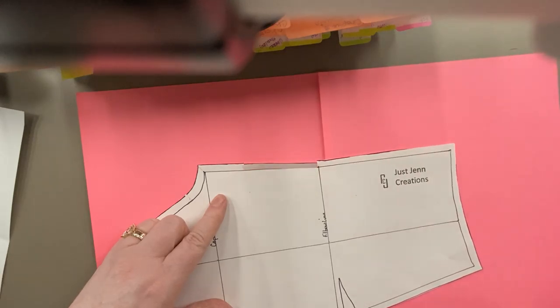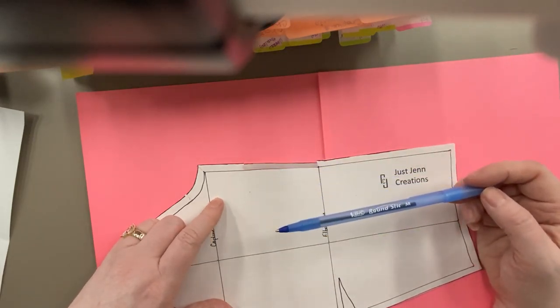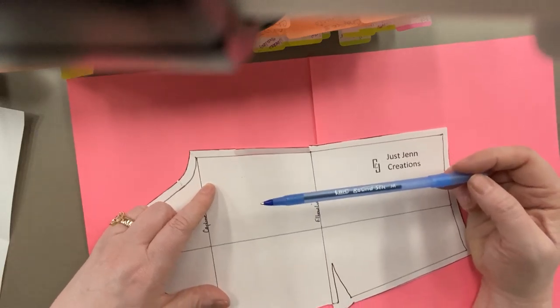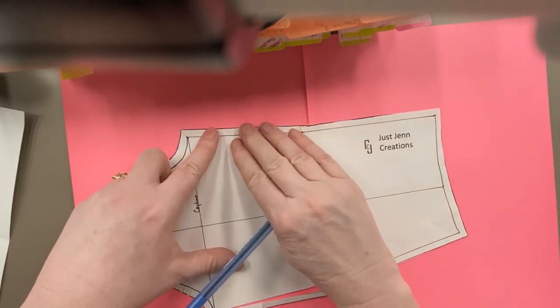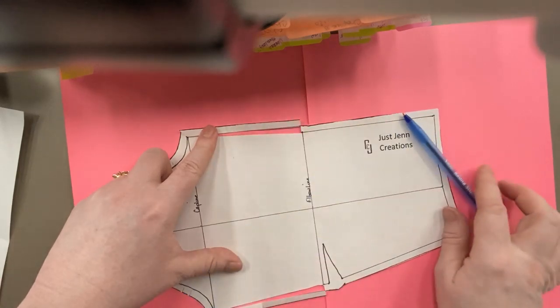I know I'm increasing circumference by a quarter of an inch, but I have two places that I have to change that. So I'm going to spread this at the upper arm an eighth of an inch.